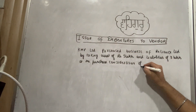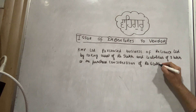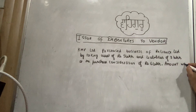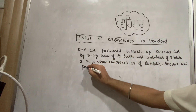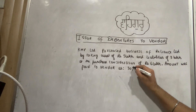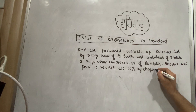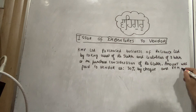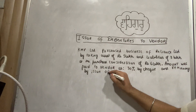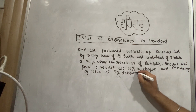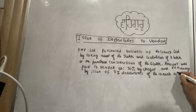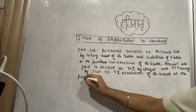After that, the amount paid — 2 lakh — was paid as 30% by cheque, and the remaining by issue of 7% debentures of rupees 10 each at a premium of rupees 2.